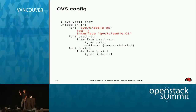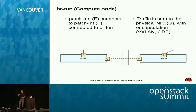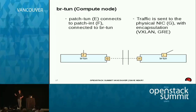Looking at OVS vsctl show, you see the port QVO with the same hex string 7C7AE61E appearing throughout the chain. Traffic gets tagged with VLAN ID 1. Then you get handed off to a tunnel bridge, br-tun, where we do the tunneling between all the hosts — GRE, VXLAN, VLAN, whatever you define in your ML2 tunnel type. It's sent to the physical NIC on the compute node and tunneled to the peer. It gets converted from GRE back to VLAN at the other end.